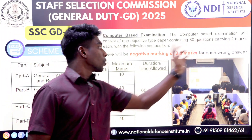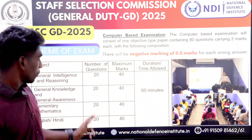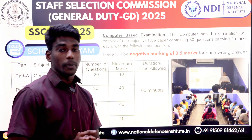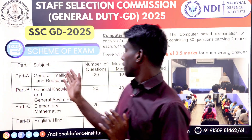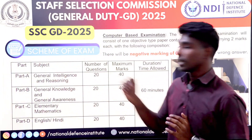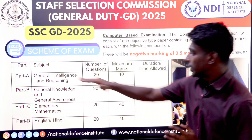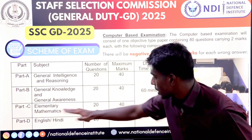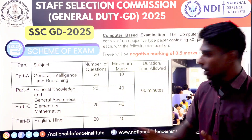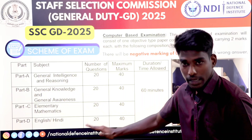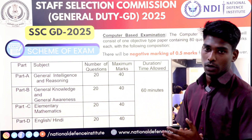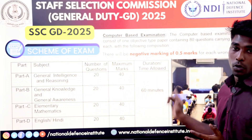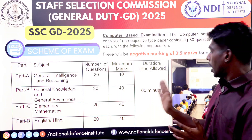In total there are 80 questions for 120 marks. Each subject has 20 questions — GK is 20 questions, Intelligence and Maths is 20 each, and English is 20 questions. The time duration is 60 minutes.